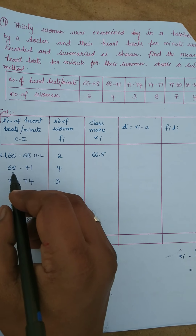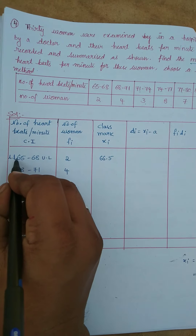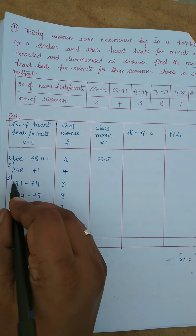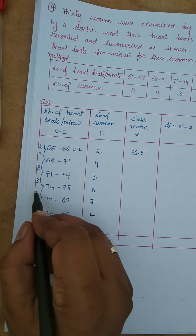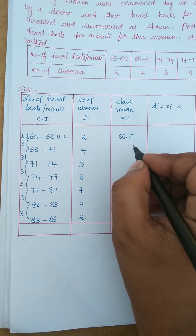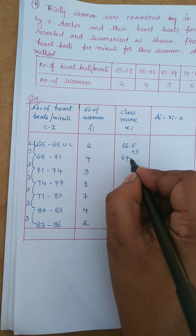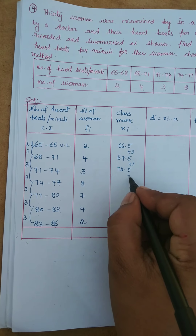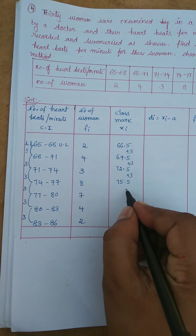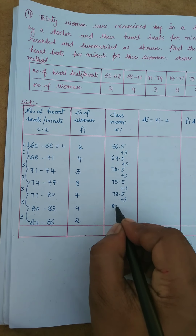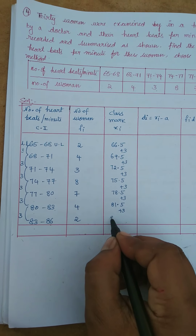For 68–71, xi = (68 + 71) / 2 = 69.5. Observing the data, the difference between two successive class intervals is 3 — for 65–68, 68–71, 71–74, 74–77, 77–80, 80–83, all differ by 3. So the difference between successive class marks is also 3. Adding 3 each time: 66.5, 69.5, 72.5, 75.5, 78.5, 81.5, and 84.5.